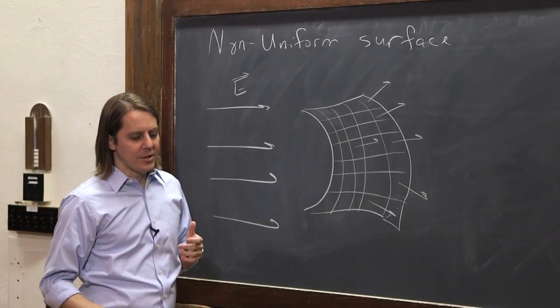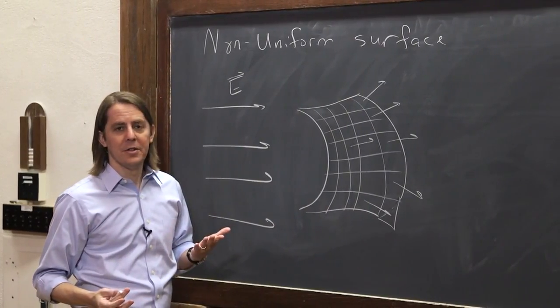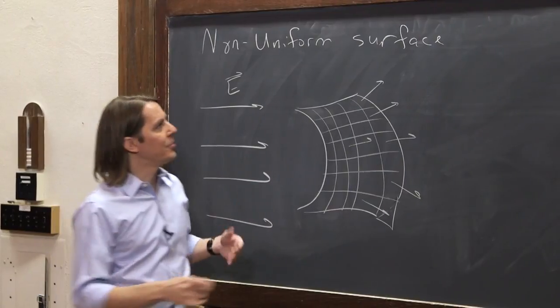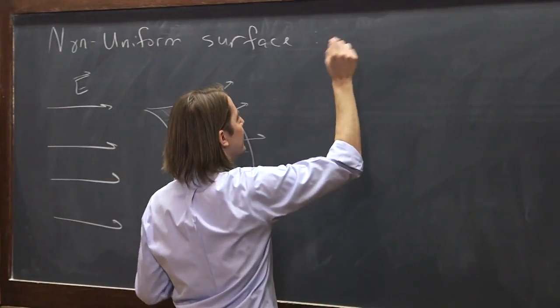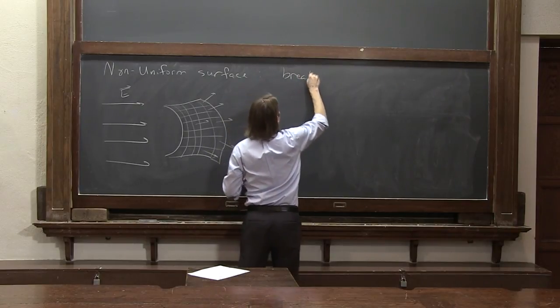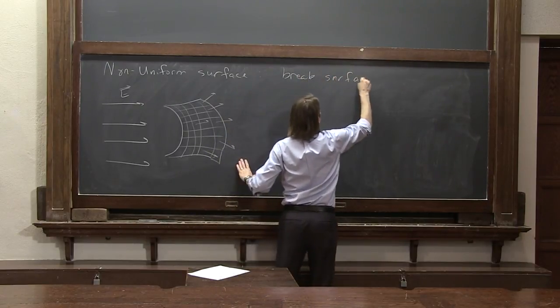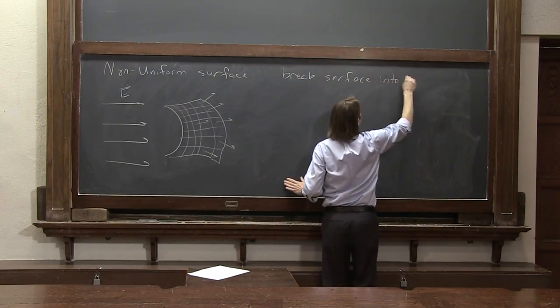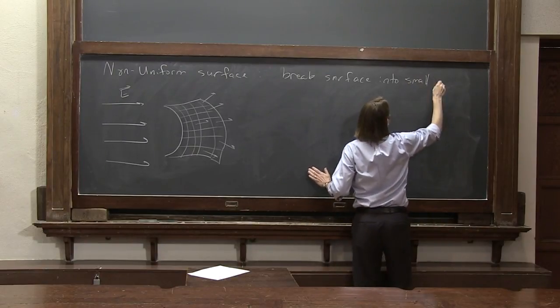Now the only complication is, how do you calculate the flux from this complicated object? We know what to do in terms of tiling it. We break the surface into small squares.